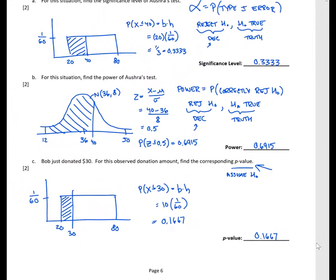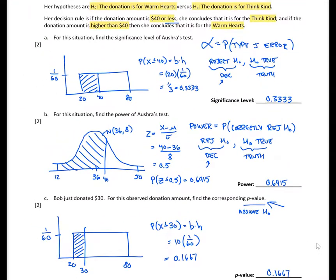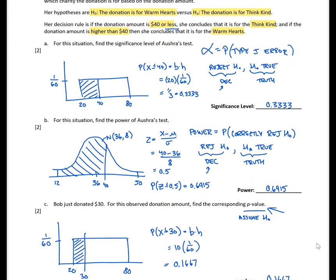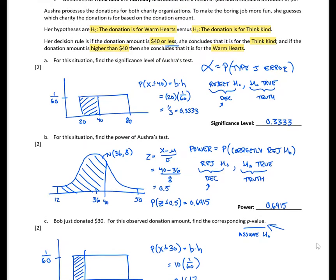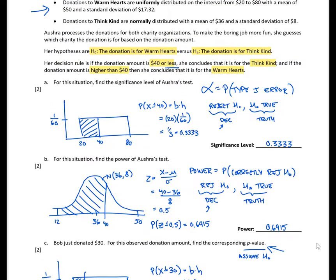So for that last problem, even though $30 is less than $40 and leads us to reject H0, because we are calculating the p-value we must assume the null hypothesis is true and use the Warm Hearts distribution.